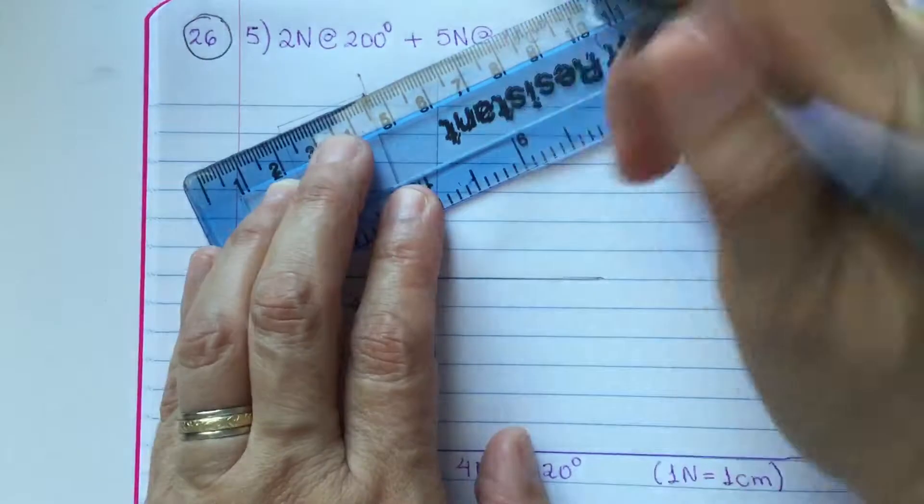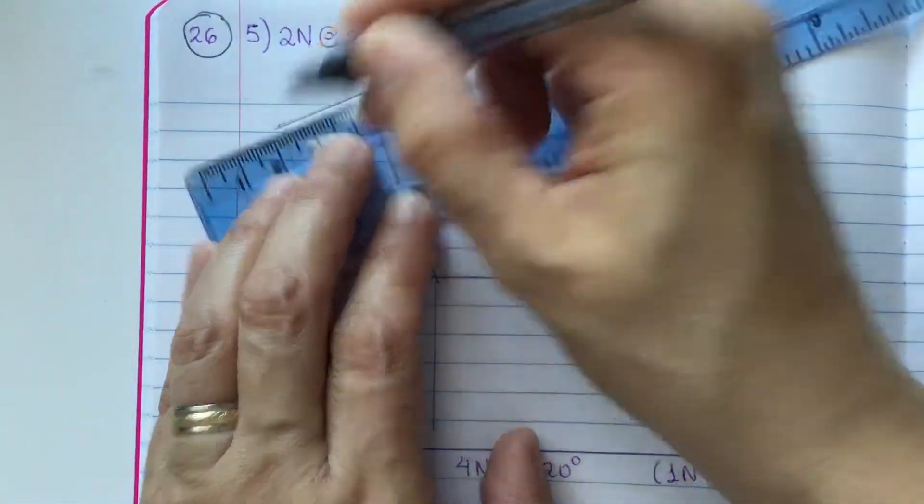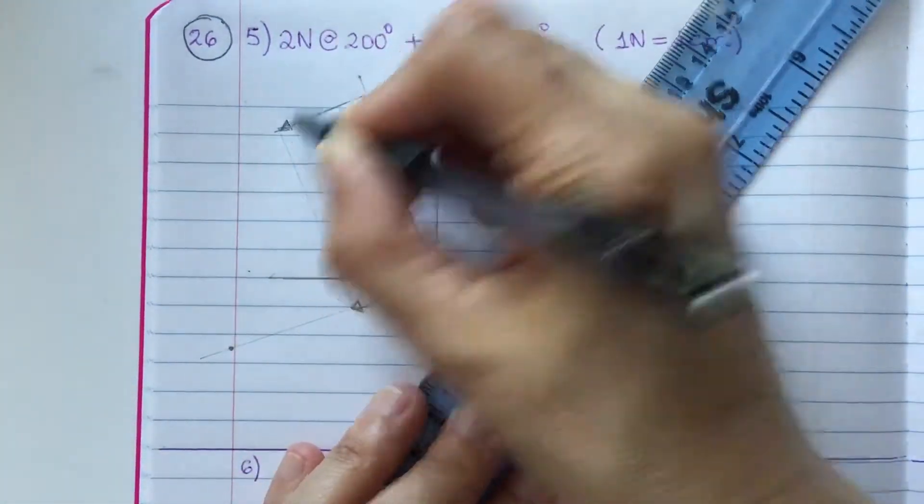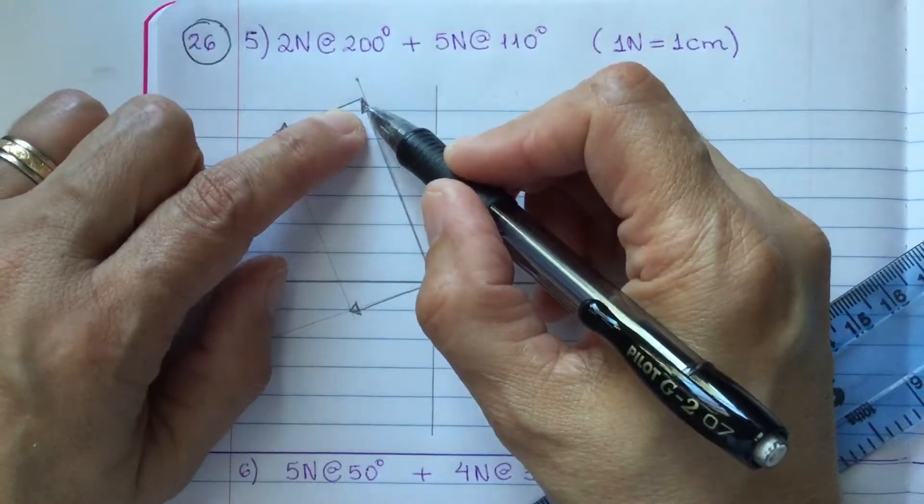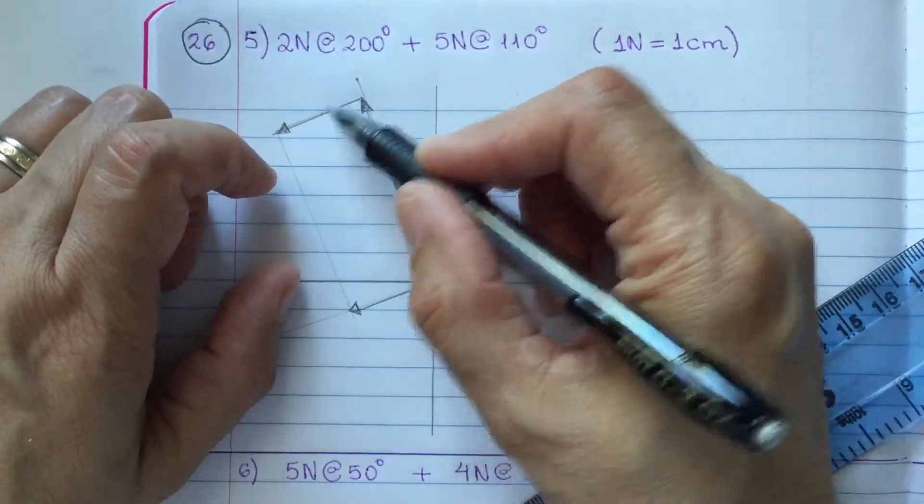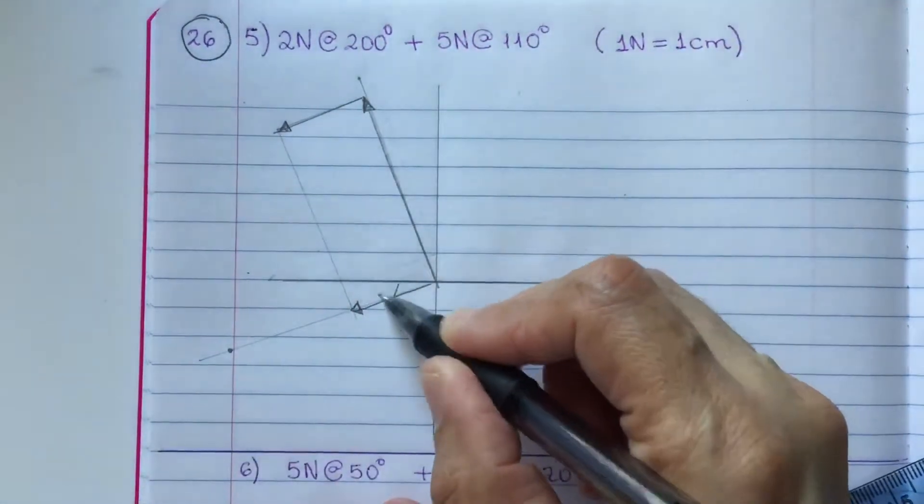So, right here, you have tip from one to the tail to the other one. This vector no longer exists.